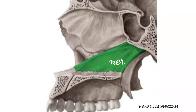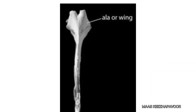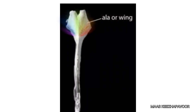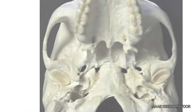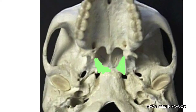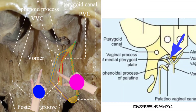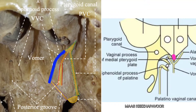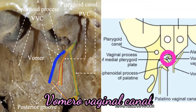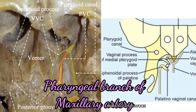The bone vomer is a flat bone that forms part of the nasal septum. The superior border of vomer gives out a wing-like expansion on either side called the ala of vomer. The medial pterygoid plate shows an extension in the upper part projecting medially called the vaginal process. The ala of vomer and vaginal process may touch or overlap each other. If they overlap, a canal called the vomero-vaginal canal may be formed, which transmits the pharyngeal branch of the maxillary artery.